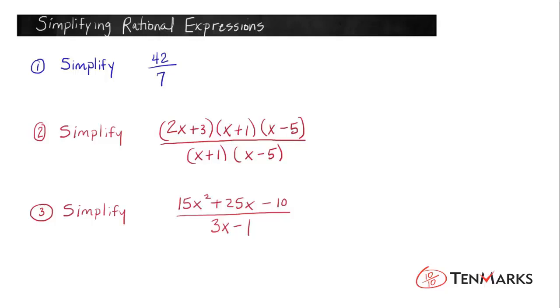Now this first question, simplify 42 over 7. This 42 sevenths is not a rational expression, that's just a fraction made of two integers. And I know that you know 42 divided by 7 equals 6, but I want you to think about it in terms of its factors. So let's look at that one first.